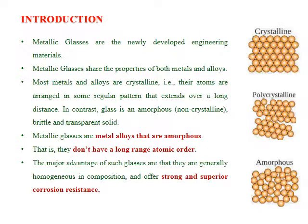Metallic glasses are a newly developed engineering material. Metallic glasses share the properties of both metals and alloys. At the atomic level, metals and alloys are crystalline in nature, meaning their atoms are arranged in a regular pattern that extends over a long distance.